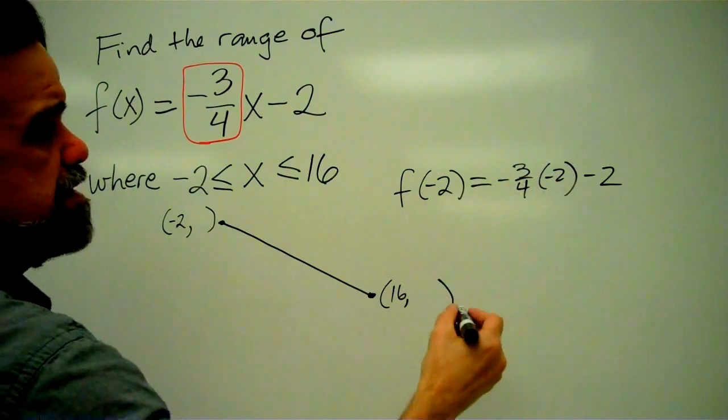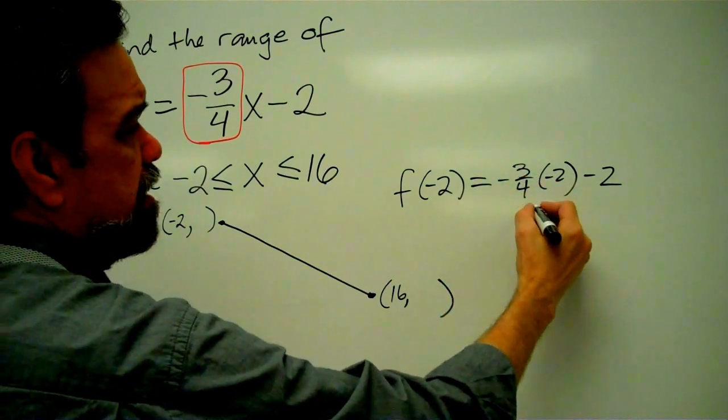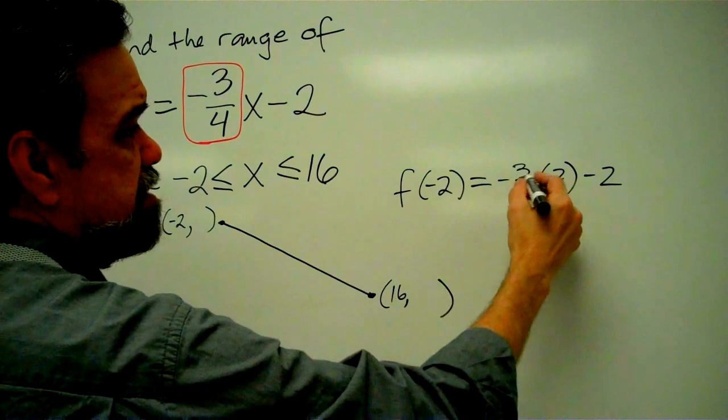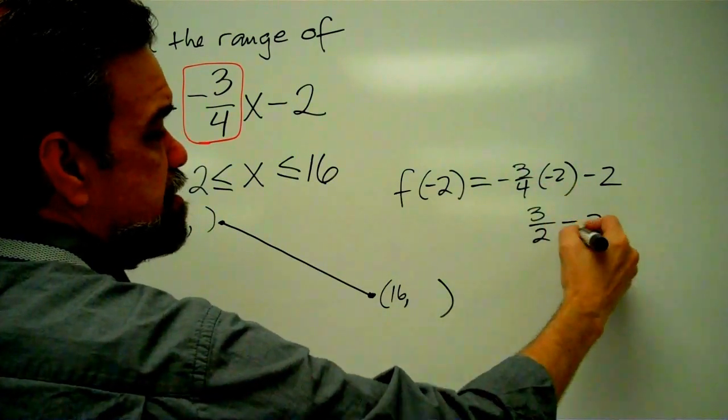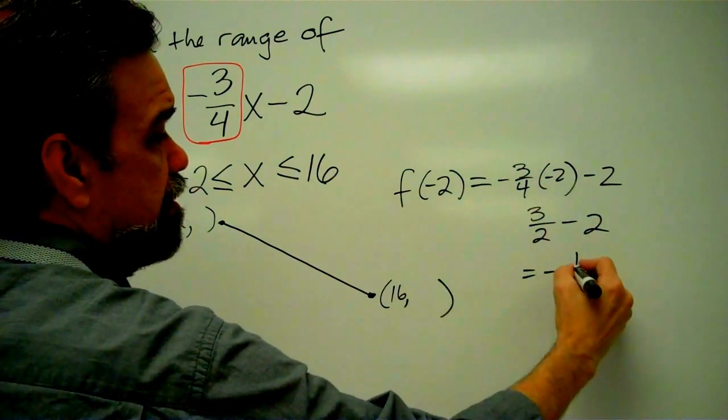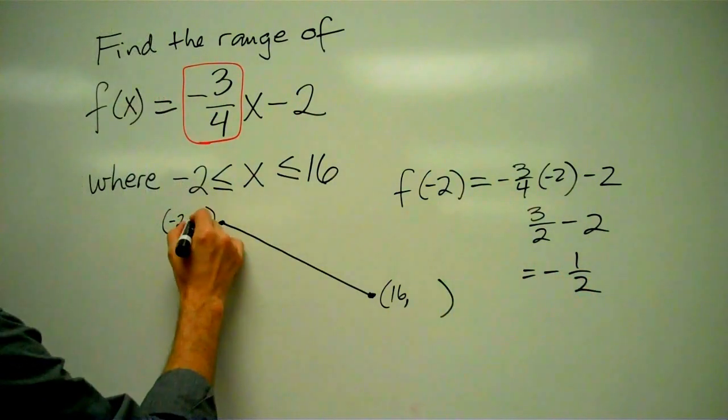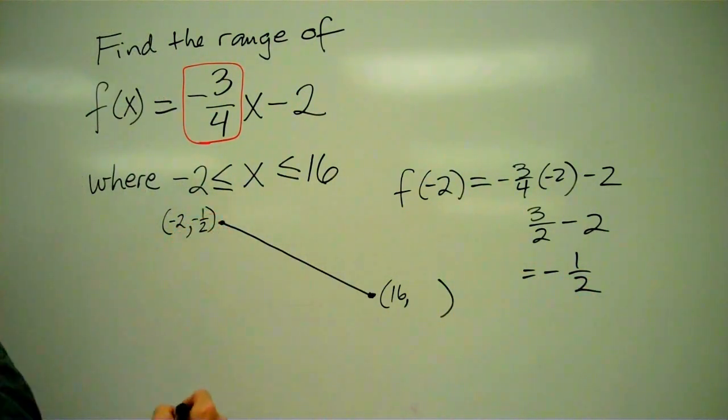Negative 3 fourths times negative 2, that's just 3 halves, positive 3 halves, because it's negative times negative, minus 2, which is negative 1 half. So there we go. This is negative 2, negative 1 half.